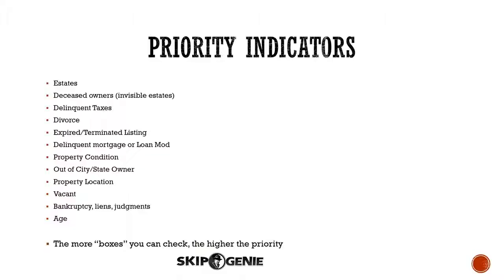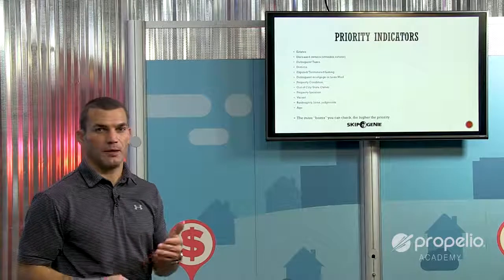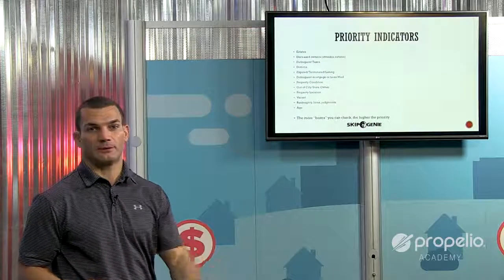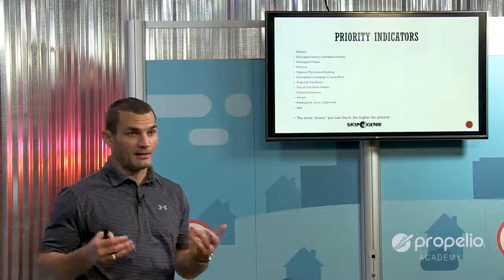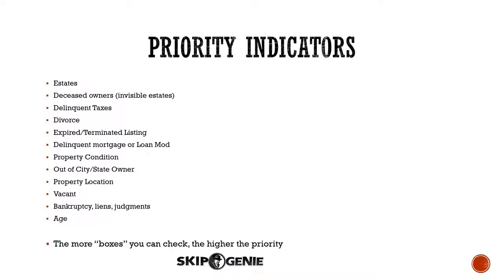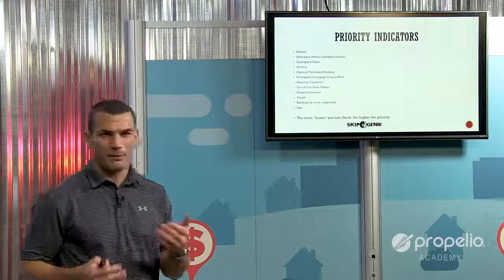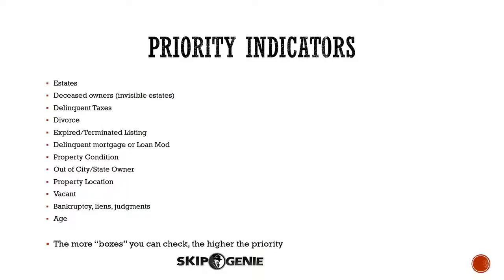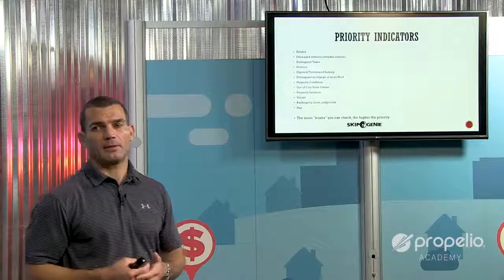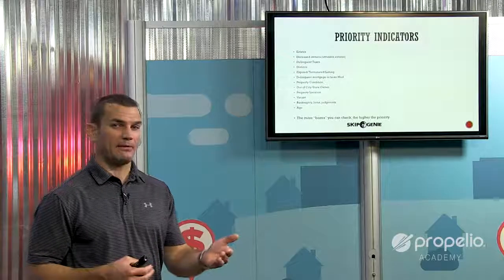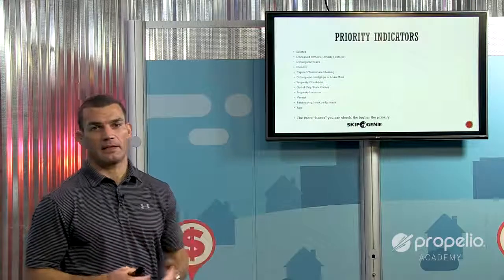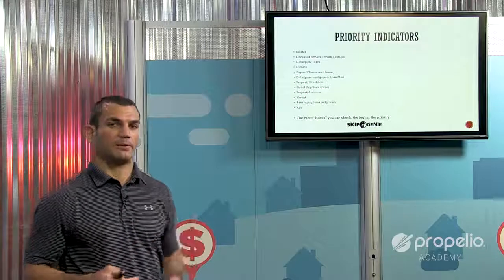The owner's mailing address is another factor — is the owner out of state, 100 miles away, or do they live five minutes away or even next door? The further away they are, the higher the priority. Vacancy is in my opinion the number one overall indicator of the likelihood of a deal. Personal financial distress indicators — bankruptcies, liens, and judgments — the more of those you see, the higher the priority. Age is also something to consider; a lot of times elderly owners may have died or may be living with family, and that plays a role in the prioritization process.